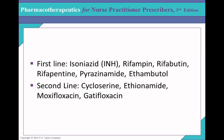Pyrazinamide is also bactericidal. When used during the intensive initial two months of treatment, it shortens therapy duration to six months and prevents development of resistance to rifampin. Its major side effects are GI upset and hepatitis, and it can produce hyperuricemia and induce gout. Ethambutol is a well-tolerated first-line drug that is also bactericidal. Its main toxicity is optic neuritis — you must refer the patient to an ophthalmologist, as it can induce optic neuritis. In addition, it can impair renal function, so check BUN and creatinine.